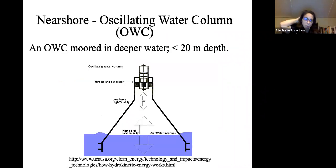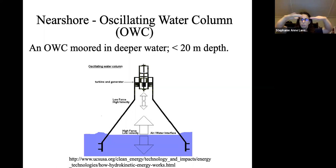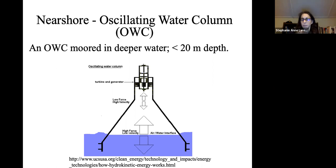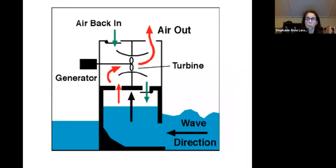We can also place OWCs near the shore instead of directly on it. Here they can be either floating or on a platform — the air-water interface principle is the same. The water comes up into the chamber, pushes the air out, and as water goes back down, air is drawn in again. It's the same idea but moored in deeper water, usually less than 20 meters. Some near-shore designs use a butterfly valve and have a little footbridge connecting to them, going up and down with the waves. The wave comes in, air is forced out and pulled in, and the Wells turbine turns in the same direction throughout.